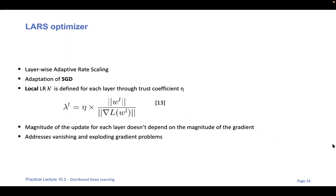Another approach when dealing with large model sizes — which are very common nowadays — is the use of specific optimizers. One of them is an adaptation of standard stochastic gradient descent with a small change: it scales the learning rate layer-wise, depending on the magnitude of the ratio between the norm of the weights and the norm of the gradient for each layer. This is called LARS, and it has been shown to provide some help during training. There are also newer optimizers like LAMB, which is based on Adam as a backbone optimizer instead of SGD.